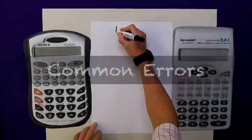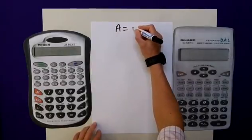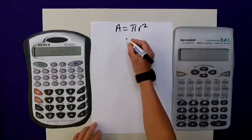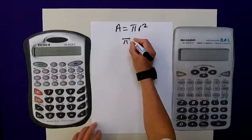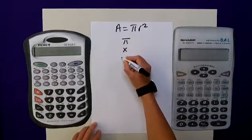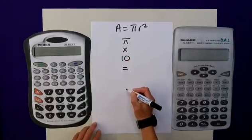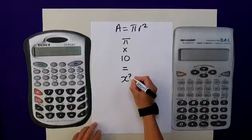Common mistakes people make with this formula, area is equal to pi r squared. Using the previous example as before, they enter in their value of pi, they then multiply it by 10, and then they press the equals button, and then they press the x squared button.